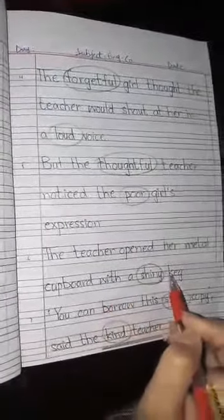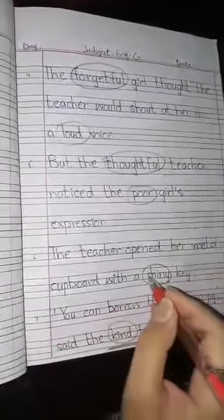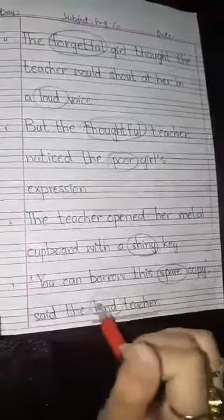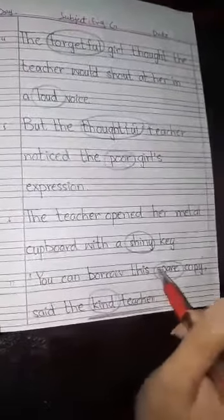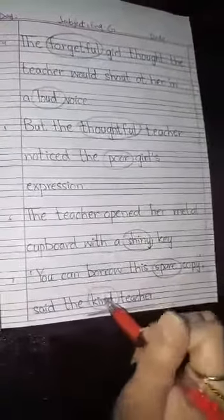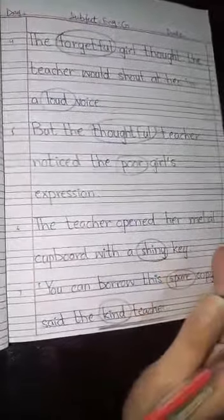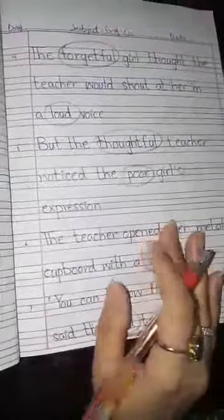Sentence number six: 'The teacher opened her metal cupboard with a shiny key.' Circle 'shiny' here. Sentence number seven: 'You can borrow this spare copy, said the kind teacher.' Circle 'spare' and 'kind' because both of them are adjectives giving you details or information related to nouns. It was so easy! That's it, we are done for today. Be ready for our next topic. Thank you, students.